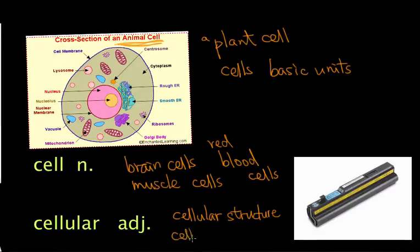We used to call the mobile phone a cellular phone because it's a small unit. Later, people started calling it a cell phone. Actually, it should be cellular phone, but people make it short and say cell phone or mobile phone. It's because it's small, just like a small unit.